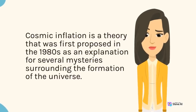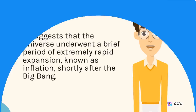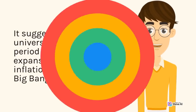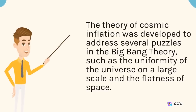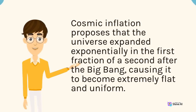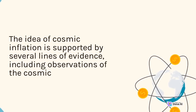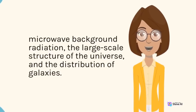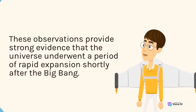Cosmic inflation suggests that the universe underwent a brief period of extremely rapid expansion shortly after the Big Bang. The theory of cosmic inflation was developed to address several puzzles in the Big Bang theory, such as the uniformity of the universe on a large scale and the flatness of space. Cosmic inflation proposes that the universe expanded exponentially in the first fraction of a second after the Big Bang, causing it to become extremely flat and uniform. The idea is supported by observations of the cosmic microwave background radiation, the large-scale structure of the universe, and the distribution of galaxies, providing strong evidence that the universe underwent a period of rapid expansion.